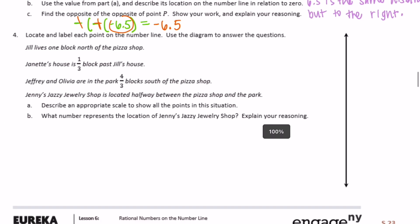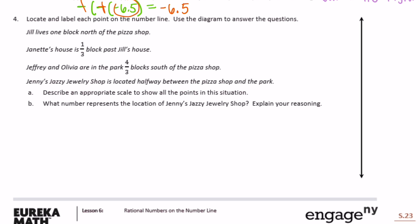Number 4: locate and label each point on the number line. Jill lives one block north of the pizza shop, so I'll put the pizza shop at zero and Jill at one. Janette's house is one third block past Jill's house, so Janette is at one and one third — I'll break those into thirds as well.